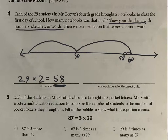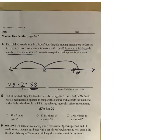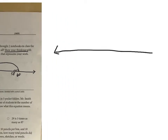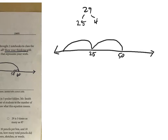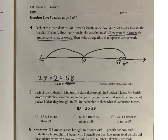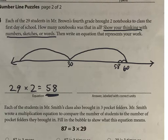Let me show you some other examples of how you can show your thinking for 29 times 2. You don't always have to use a number line, but that's one way. You might also think 29 breaks into 25 and 4, because 25 is a pretty easy number to work with — so 25 times 2 is 50, then 4 times 2 is 8, giving you 58. Or maybe you broke it into 20 and 9: 20 plus 20 is 40, and 9 plus 9 is 18, giving you 58. However you thought about it, write about that — everyone thinks about it differently, there are probably half a dozen ways.